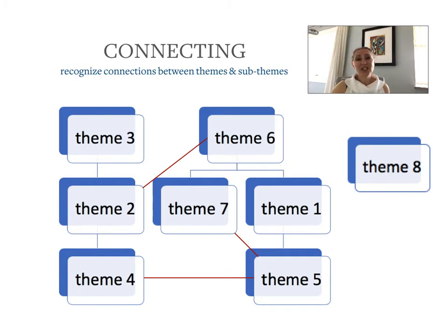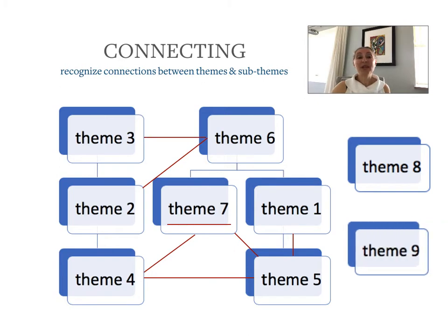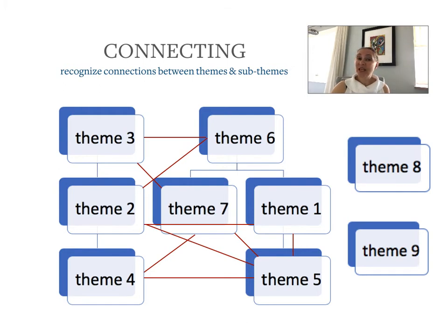If the cross-connections and irregularities seem too numerous, or you're having trouble maintaining the rationale for your framework, it may be because the framework itself is inadequate for representing your data and your results. That realization will send you back to the previous stage of organizing, but with more knowledge and understanding of your data. So have faith that a more authentic framework will emerge.